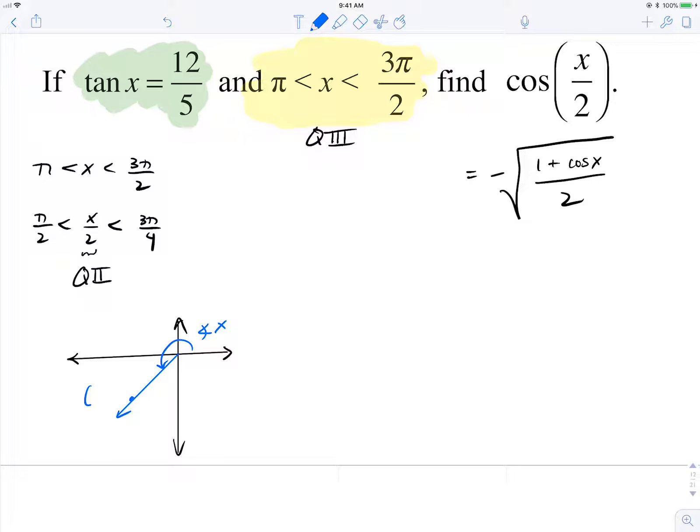So the point that the terminating side of the angle x passes through is going to be negative 5, negative 12. And we don't know r.